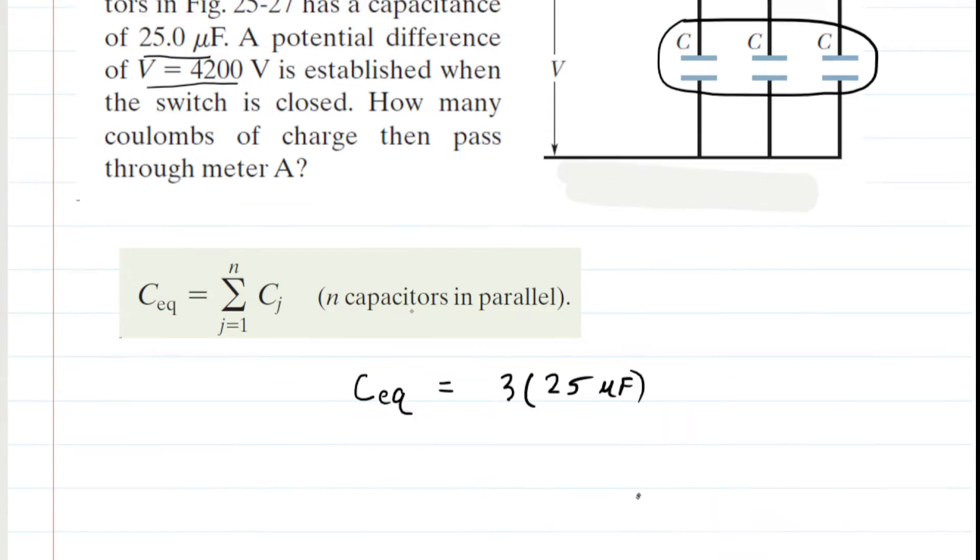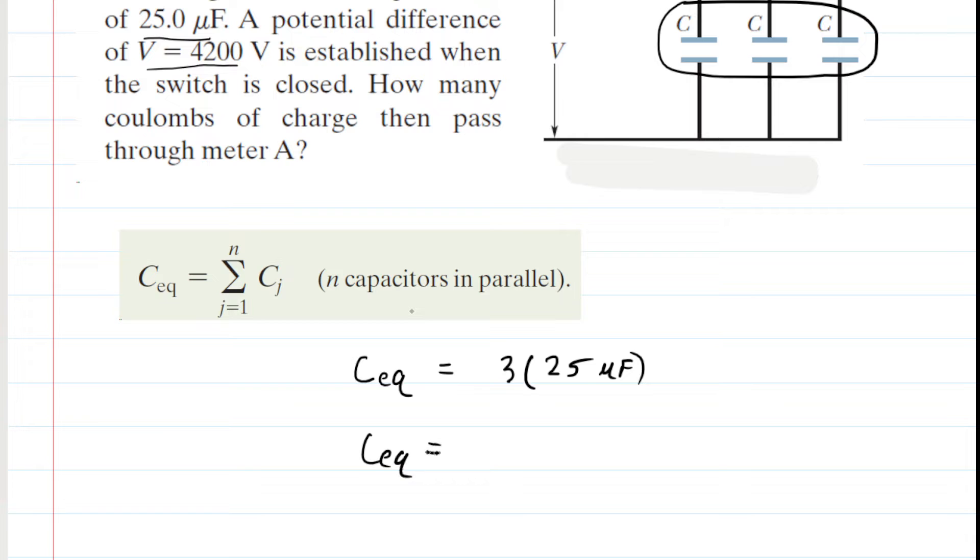If we do this, we get a capacitor whose equivalent capacitance is 75 microfarads. Microfarads would be times 10 to the minus 6 farads. So that would be our equivalent capacitance.